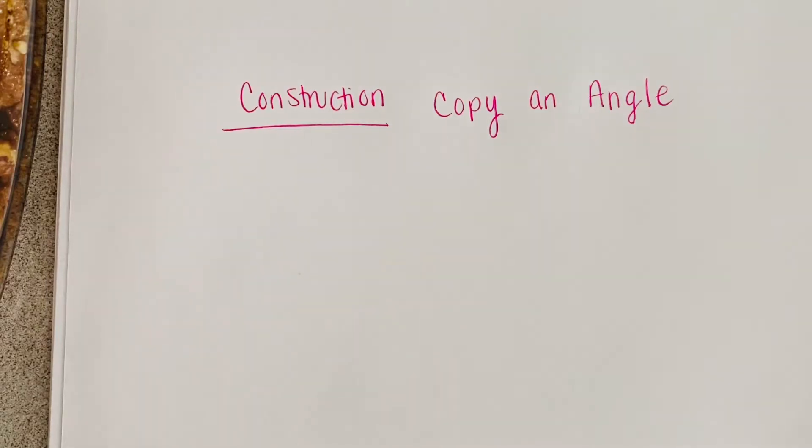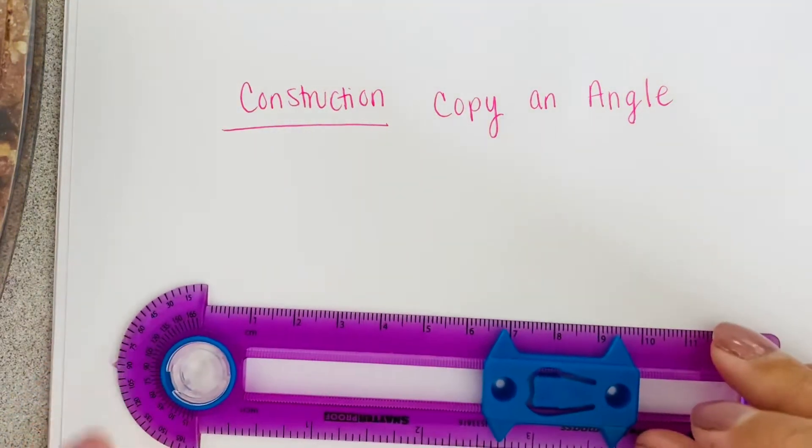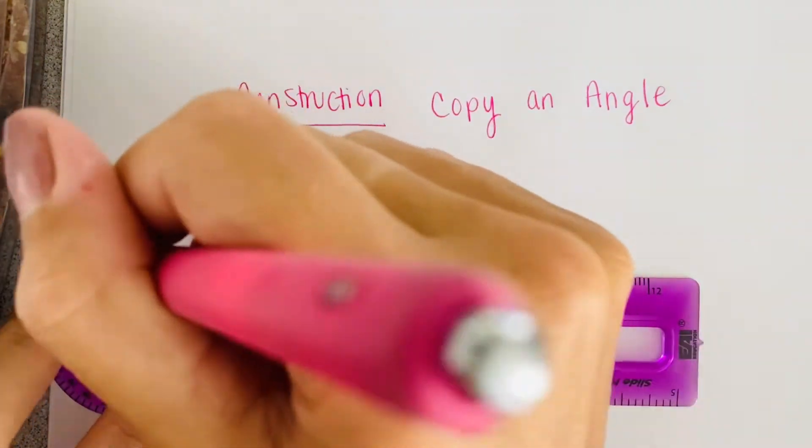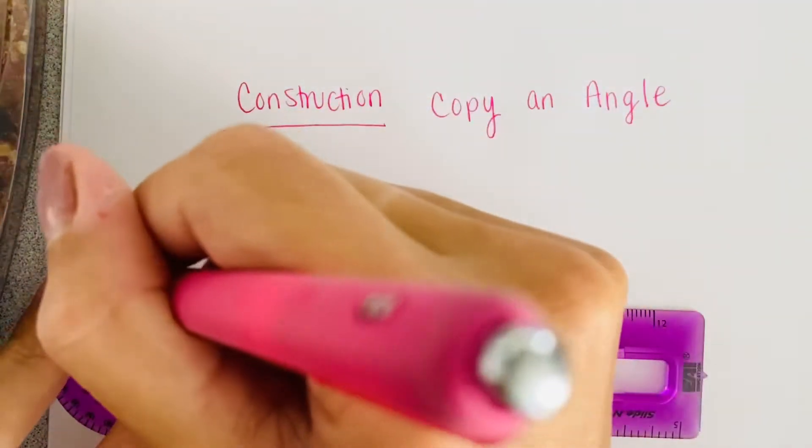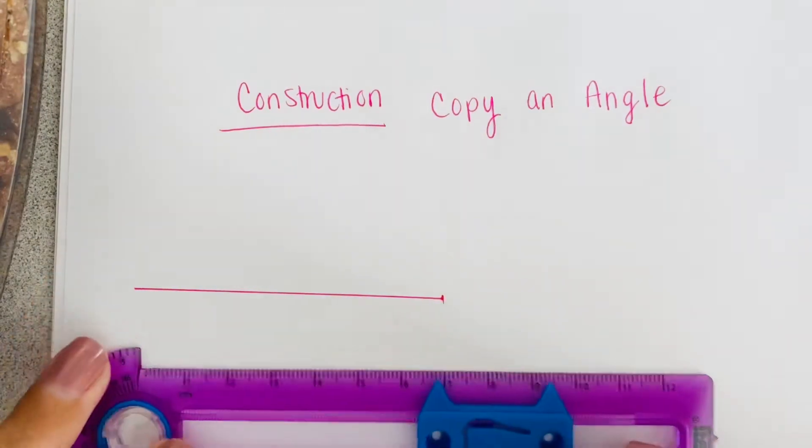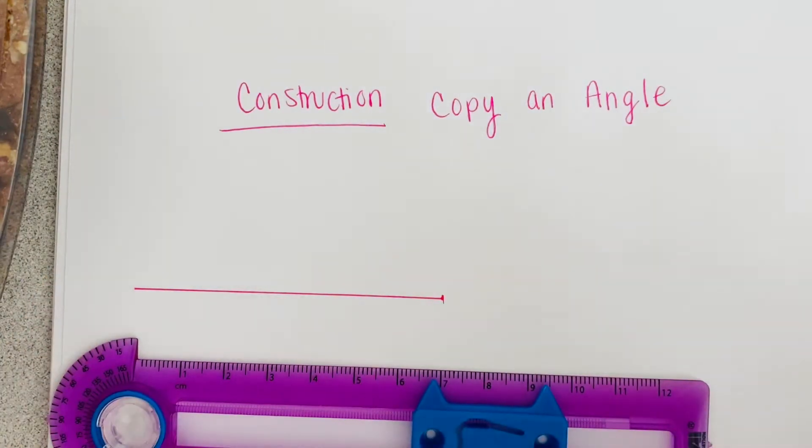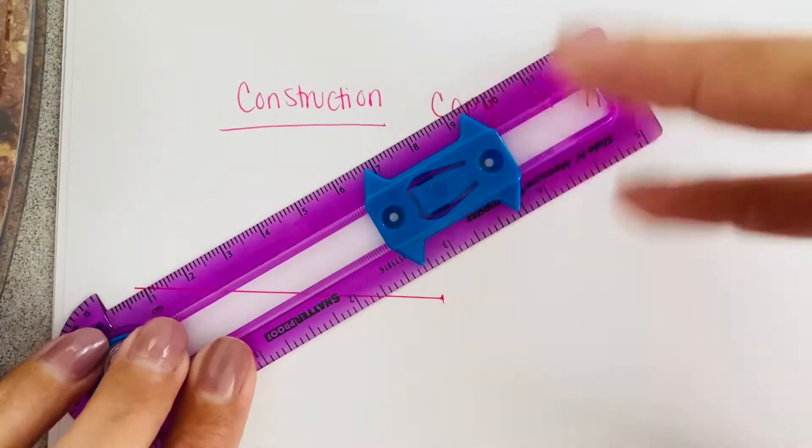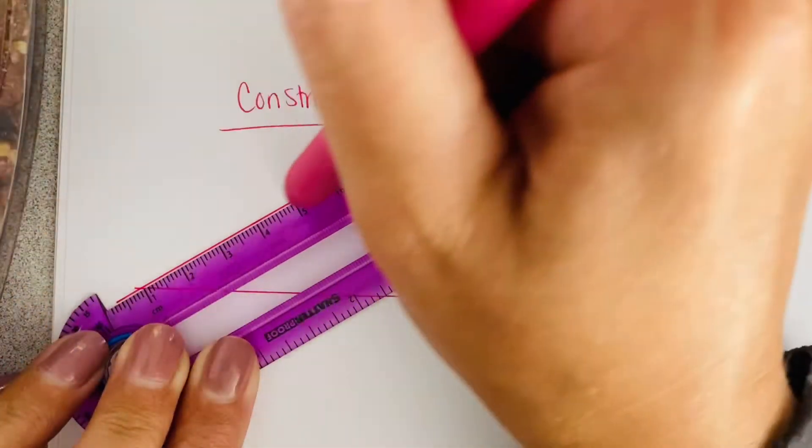The next one we're going to do is copying an angle. Usually you're typically given an angle, but we're going to construct or just make a quick angle. I'm going to draw a line somewhere and it's going to be an acute angle. Draw a line using your straight edge, your compass, or your protractor. Make sure it's straight, and then I'm going to make another line intersecting that first line.